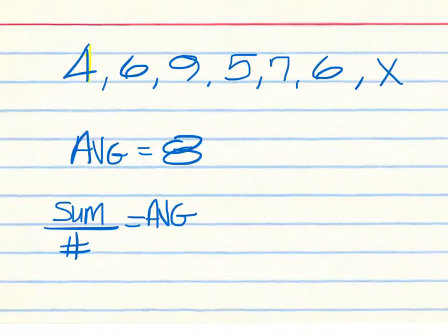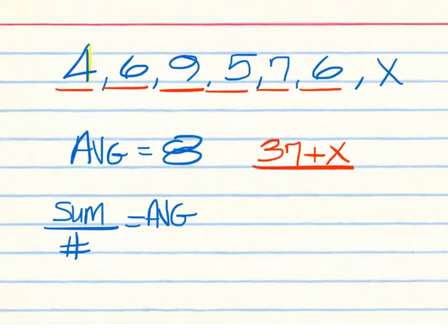So in order to solve for that missing number, we can plug in what we know. We have 4 and 6, that's 10, and then plus 9 is 19, 24, 31, and 37. We have a sum so far of 37, but we also have to add to that X. We do know how many numbers we have, all we have to do is count them: 1, 2, 3, 4, 5, 6, and the X is 7.